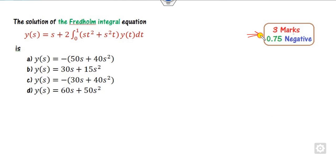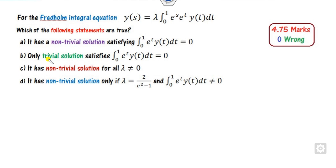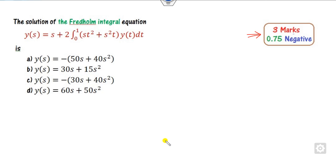The first question is related to 3 marks with 0.75 negative marking, and you have to find the solution of this problem. The second question is of 4.75 marks, that is a part C, and you have to give a decision based on trivial and non-trivial solutions. Every year, a Fredholm integral equation question is definitely asked in the NET examination.